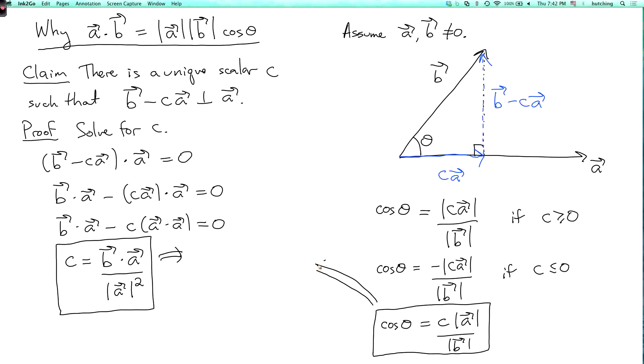So I'm going to take my equation for cosine of theta and plug in my equation for c. So I get cosine of theta equals, so c here is b dot a over the length of a squared. And then I multiply by the length of a over the length of b. And now I can cancel out the length of a here and cancel out this squared here. So I get cosine of theta is b dot a over length of a times length of b.